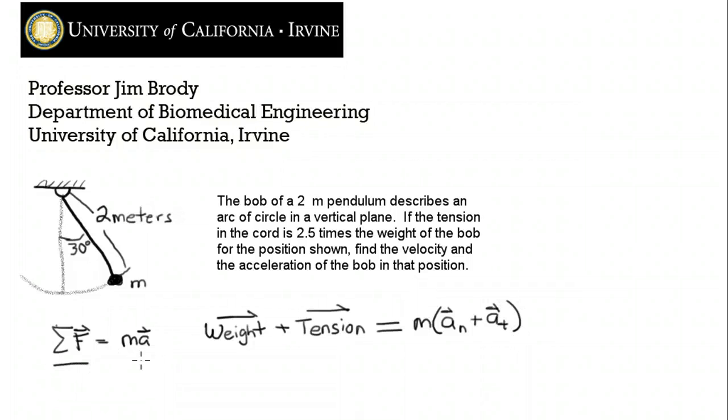So the sum of all the forces is equal to the mass times the acceleration. The trick with all of these problems is to choose the right coordinate system to do the calculations in. And in this case, the easiest coordinate system has to do with taking the normal and the tangential portions of the acceleration.